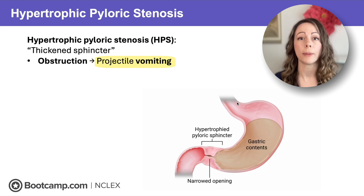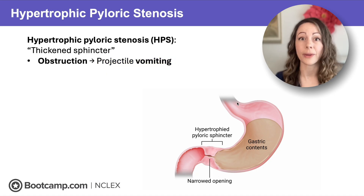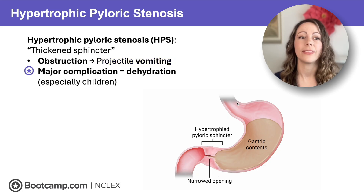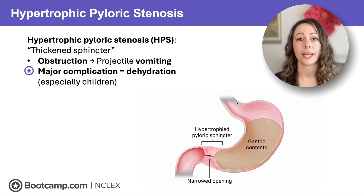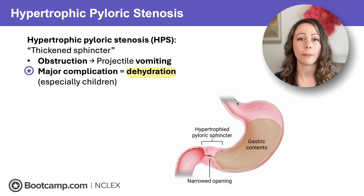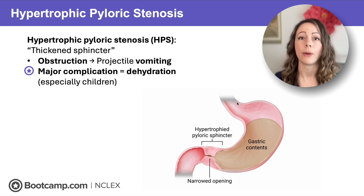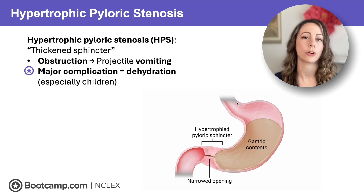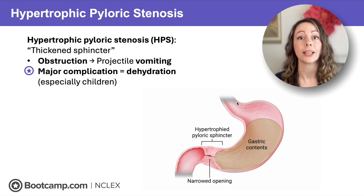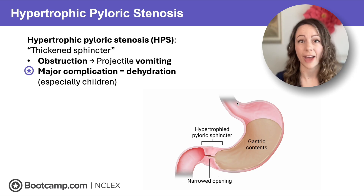Not just regular vomit, but vomit that goes across the room and literally hits the wall. This leads to our major complication: dehydration. When there's a lot of vomiting, we lose a lot of fluid, and we're especially worried about this in kids because they have a greater body surface area to mass ratio, so they lose fluid fast.